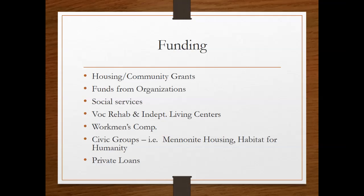There are two medical loan closets here in Wichita. The one on Second Street just north of Newman is connected to an independent living center designed to help people modify their home and live independently as long as possible. People may also be able to get funds from workman's comp. Civic groups like Mennonite Housing and Habitat for Humanity actually come out and build ramps — it's really pretty cool what they do.